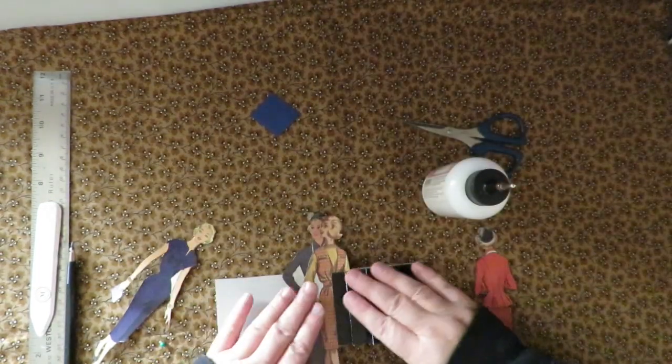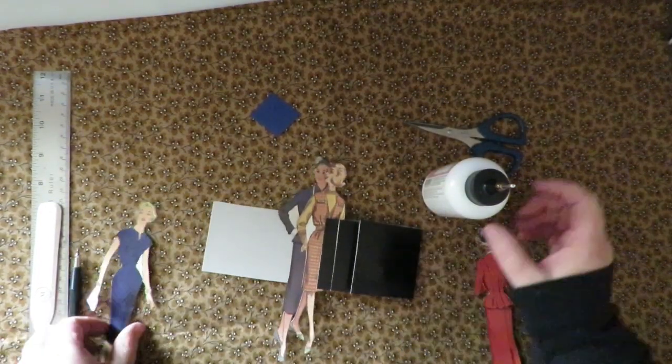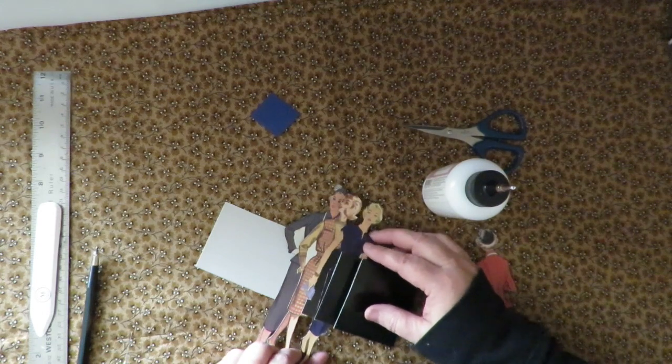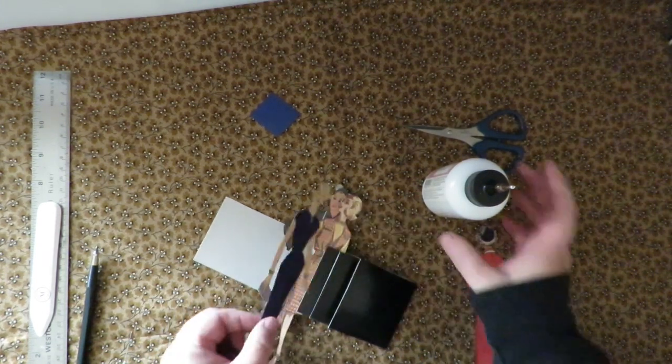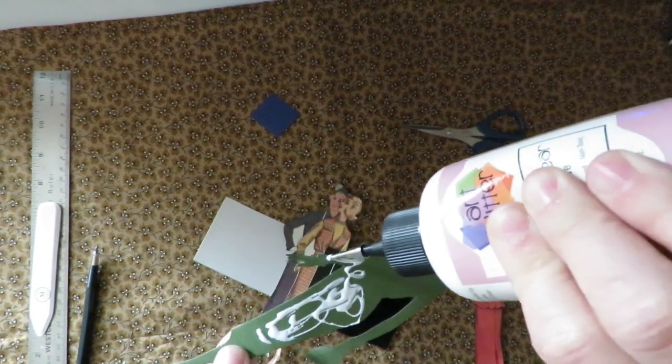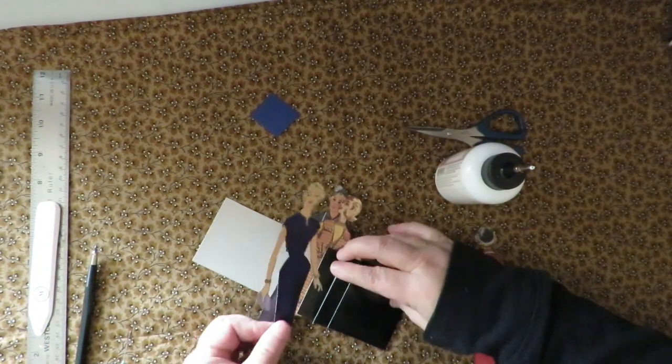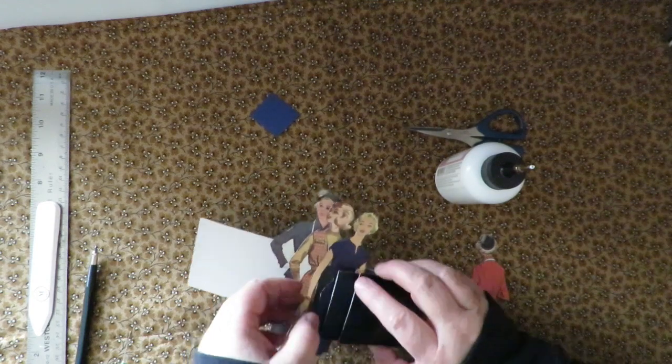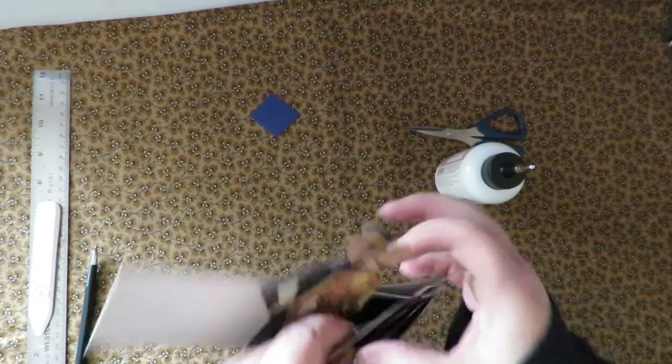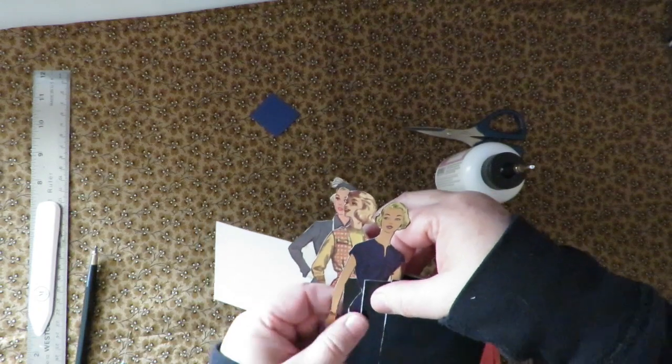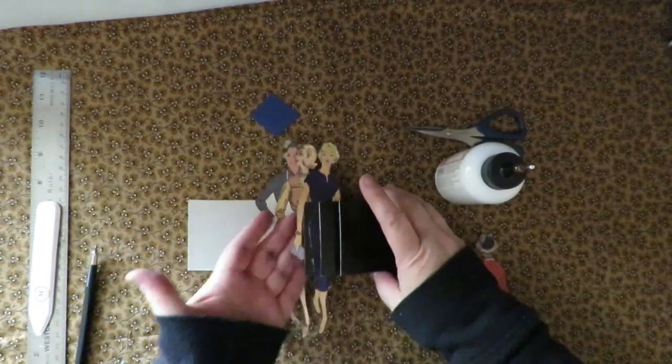So now that one I'm going to go in a little ways, I think. Because if she's right out on the edge, she covers the other girl too much. So I'm going to move her in a little ways. So just putting glue in the area that's going to stick to the card, moving her in a little bit. I like that. That looks good.